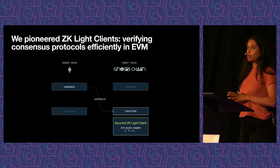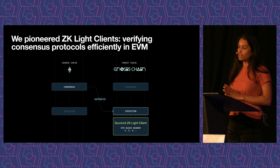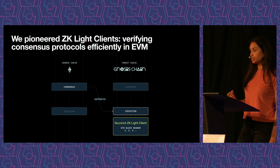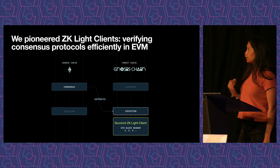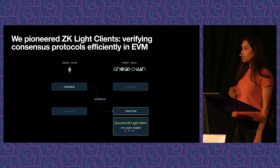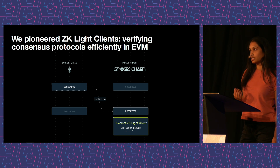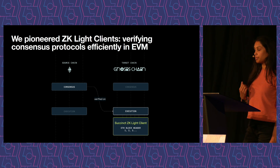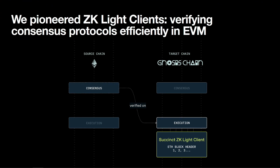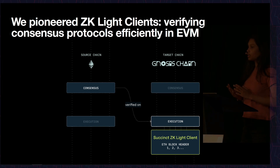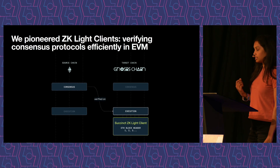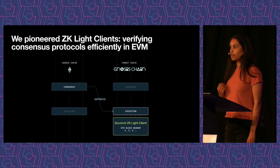We thought a lot about this problem and realized that one area where ZK is currently underutilized is interoperability. Over the past year, we've been working on this concept of ZK light clients, which is basically verifying consensus in a ZK circuit. ZK lets you compress computation, which is why it's really useful for scaling blockchains using ZK EVMs. But we also realized you can take those same scaling properties and apply them to verifying consensus.